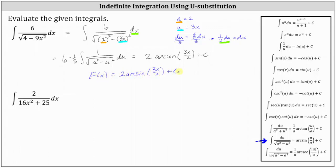Looking at our second example, we have the integral of two divided by the quantity 16x squared plus 25 dx. Notice now we have a sum in the denominator without a square root. Looking back at the integration formulas, the integral fits the form where we have the integral of du divided by the sum of a squared and u squared, which equals one divided by a times the arc tangent of u divided by a plus c.